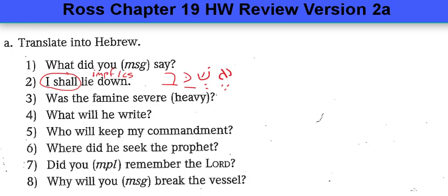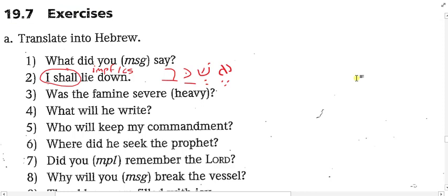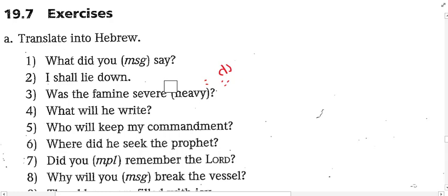Here are the chapter 19 exercises, and I think what I asked you to do was exercises 1 through 8 on the homework. Does that sound right? Just 1 through 8. We can look at some more if you want, but does anybody have any specific questions about 1 through 8? I'd like to spend most of our time going through these for the remainder of the class period and maybe even practice creating some verb forms.